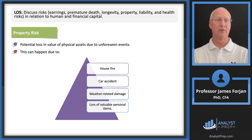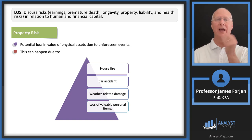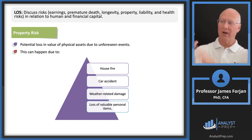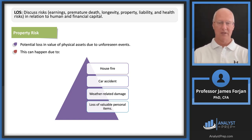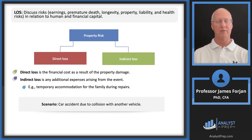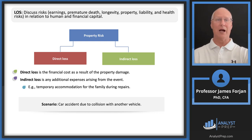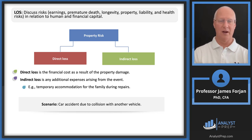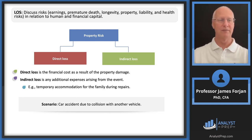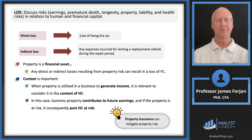Property risks include house, car, weather-related damages, and loss of personal items. There are direct losses (the financial cost) and indirect losses (additional expenses, such as the rental car allowance in an auto policy). Property should be thought of as a financial asset — a loss there affects what you can do elsewhere, like an opportunity cost. Business property that contributes to future earnings puts human capital at risk, so property insurance can mitigate property risk.